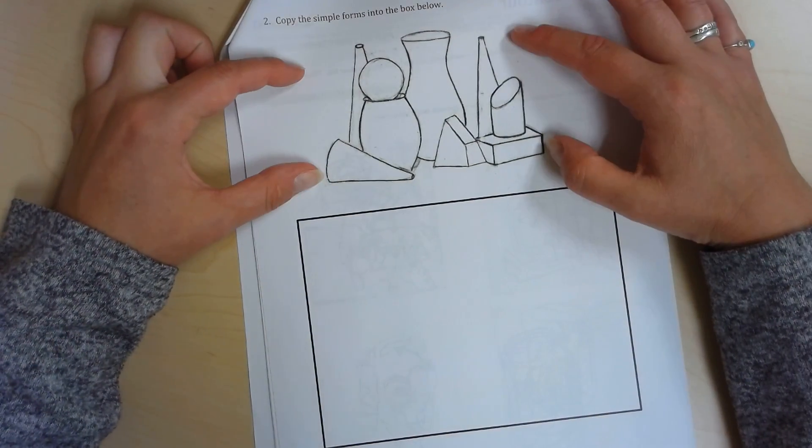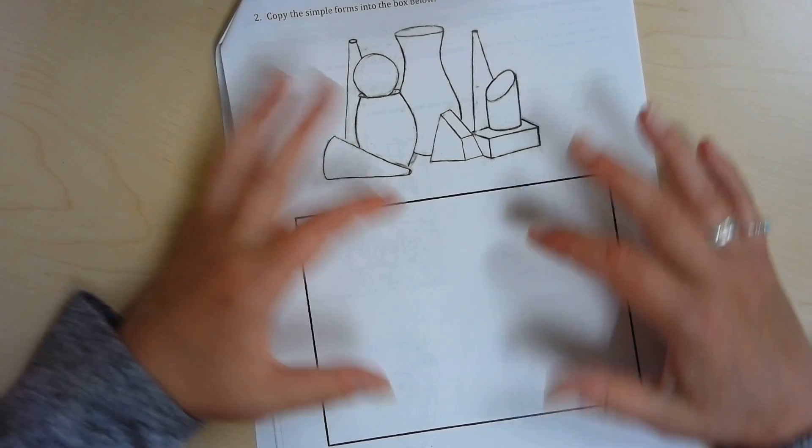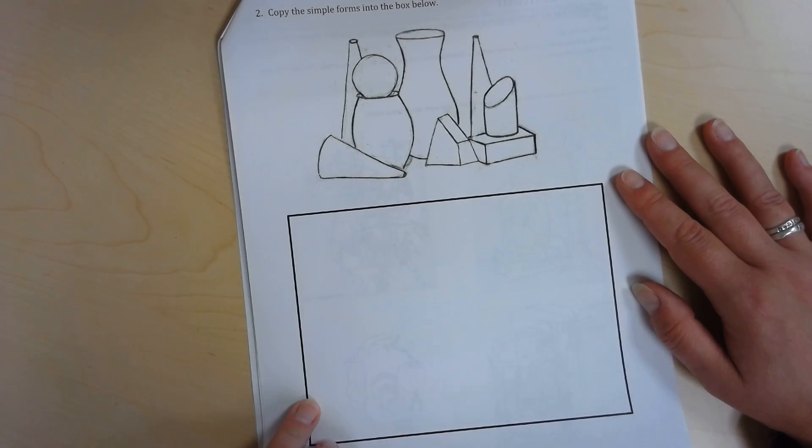So we're going to continue that in this box below. It says to copy the simple forms into the box below just as you see it. You can make them a little bit bigger but not too big or else it's not going to fit in your rectangle.